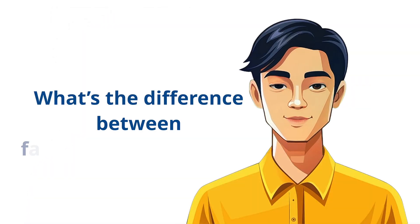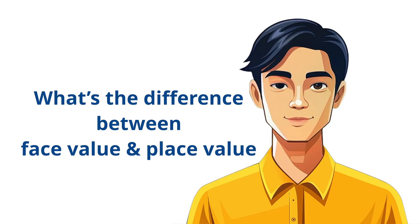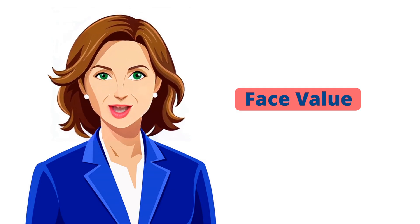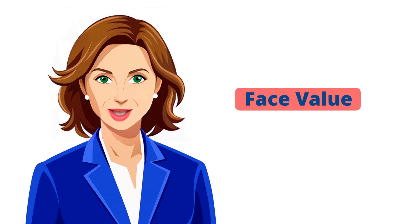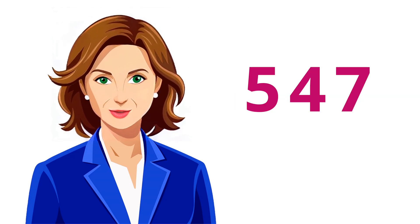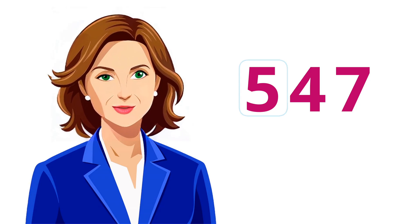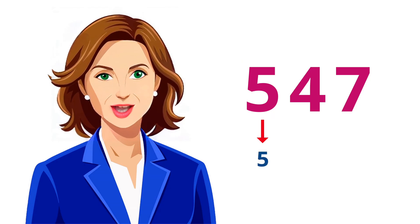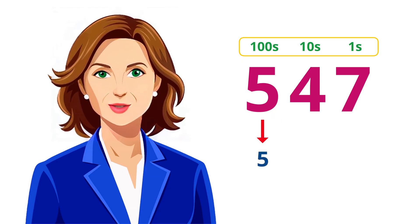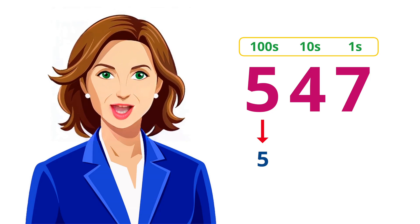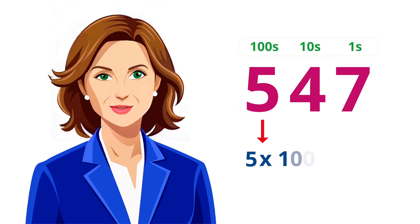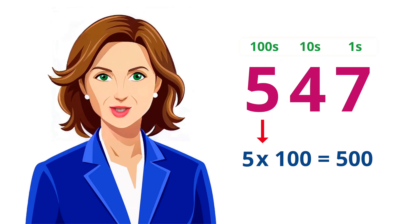I often hear about face value and place value. What's the difference between them? Great question. Face value is the actual value of the digit itself, no matter where it is in the number. So in the number 547, the face value of 5 is just 5. Place value, on the other hand, depends on the position of the digit. In 547, the place value of 5 is 500, because it's in the hundreds place.